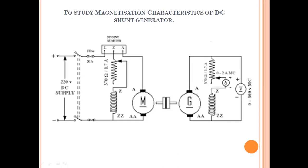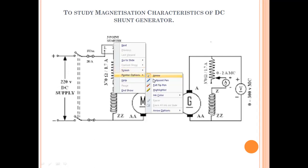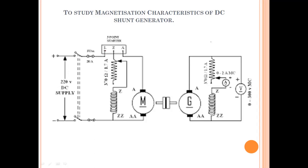This is a motor set which is connected to the generator set. The DC generator shaft is coupled with the DC motor. The LFA is a three-point starter where L is the line, F is the field, and A is the armature.